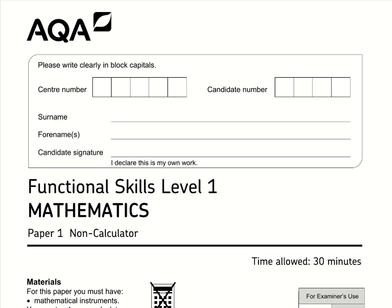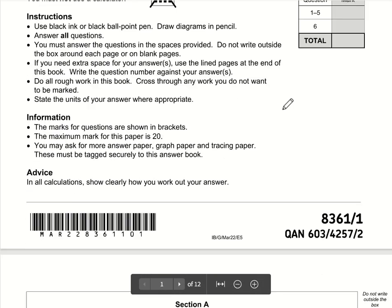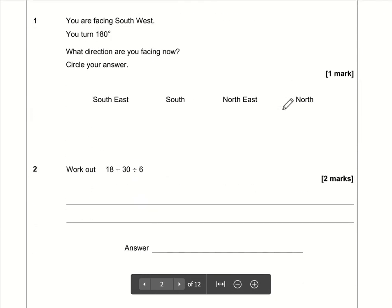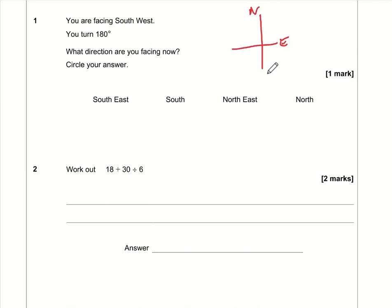Here are the video solutions for AQA Functional Skills Maths Level 1, Paper 1, the non-calculator paper from March 2022. Question 1: You're facing southwest. Using the compass mnemonic (Never Eat Shredded Wheat), southwest is down here. If you turn 180 degrees, you'll be facing northeast.